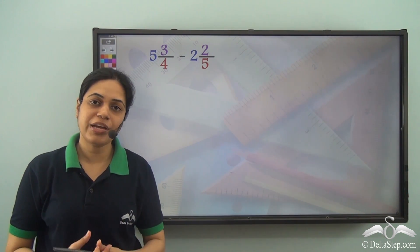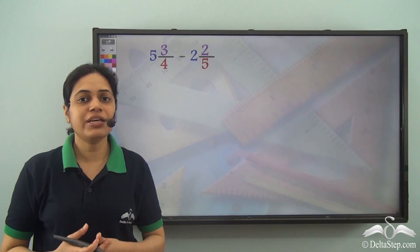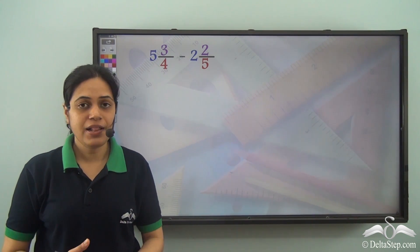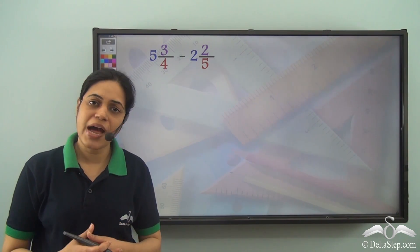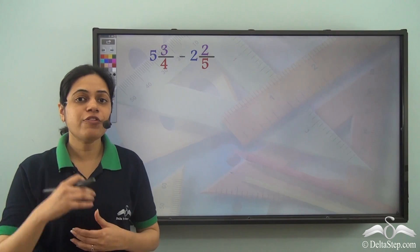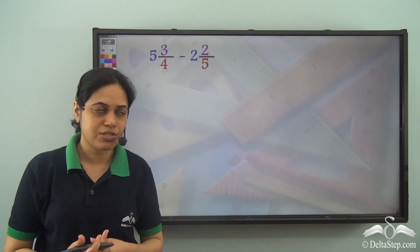We have already seen how we can add two mixed fractions. Now let's see how we can subtract them. Subtracting mixed fractions is very similar to adding them. Instead of adding the numerators, we simply need to subtract the numerators.